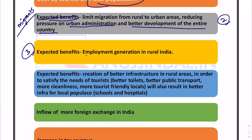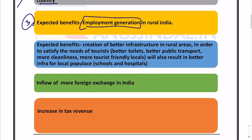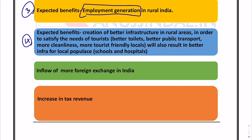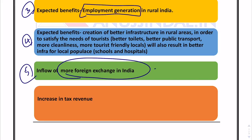The third benefit is employment generation in rural India. The fourth expected benefit is creation of better infrastructure in rural areas in order to satisfy the needs of tourists — better toilets, better public transport, better cleanliness, and skill development of locals. All these things provided in rural areas will result in overall development of rural infrastructure. The fifth benefit is inflow of more foreign exchange, as more rural tourism means more people coming from abroad to explore these rural tourist areas.